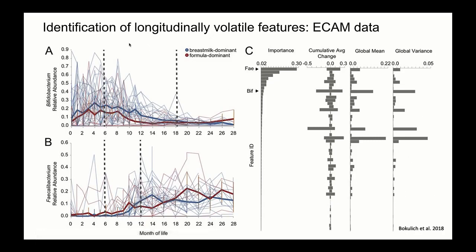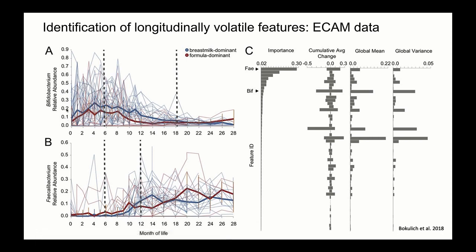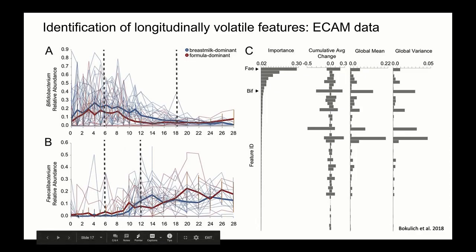Let's take a closer look at these volatility plots. In these plots we have relative abundance on the y-axis and time in months on the x-axis. In the Bifidobacterium plot, we see an increase in relative abundance from 0 to 6 months and a subsequent decline from 6 to 18 months. Whereas in Faecalibacterium, there's not really an increase between 0 and 6 months, but then an increase does occur between 6 and 12 months.